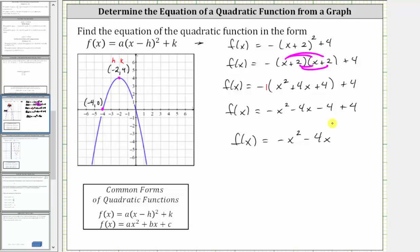So now we have the equation of the function in both forms of a quadratic function. This first form is often called vertex form, and this last form is sometimes called standard form or general form. I hope you found this helpful.